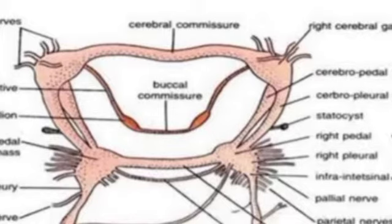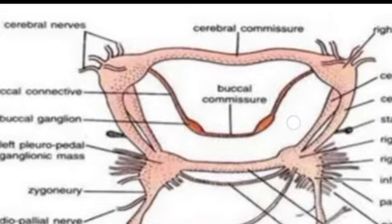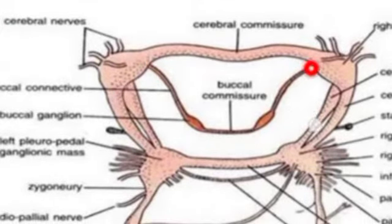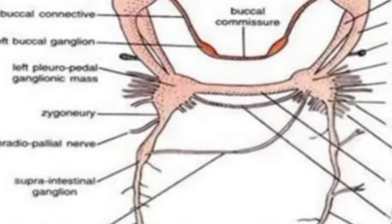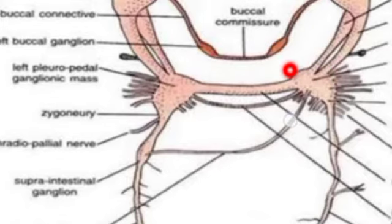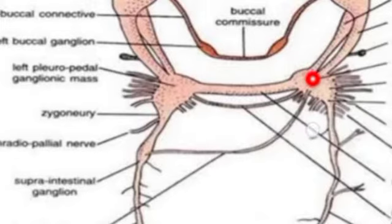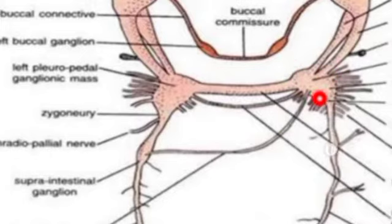The nervous system of Pila consists of five ganglia. The first is the cerebral ganglion — there is a right cerebral ganglion and a left cerebral ganglion. The second ganglion is the buccal ganglion — there are two buccal ganglia. After that we have the pleuropedal ganglion: the outer side is the pleural ganglion and the inner side is the pedal ganglion. They look like a connected or fused ganglion, but a notch separates them. These two ganglia are collectively called pleuropedal ganglia.